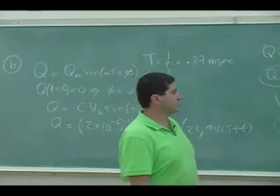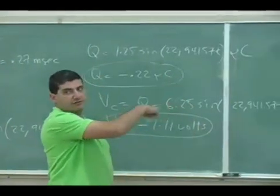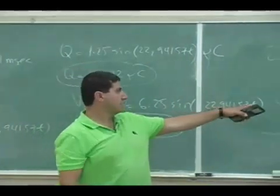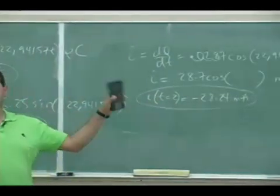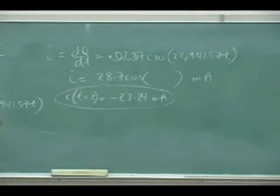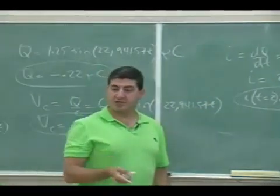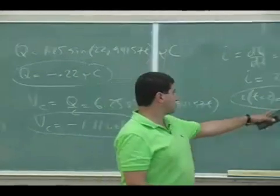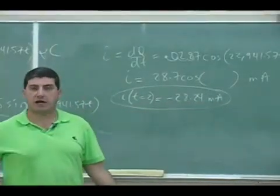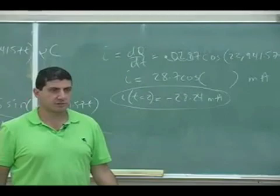The negative sign just means it's the opposite of the initial direction, whatever the initial direction is. Right now, it doesn't necessarily mean counterclockwise or clockwise. However the current is set up depends on how the battery is set up. But the current direction negative just means it's opposite to how the battery is set up.